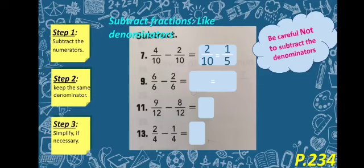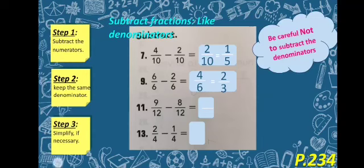Question number 9: 6 over 6 minus 2 over 6. 6 minus 2 equals 4, and we keep the same denominator, giving us 4 over 6. 4 over 6 can be simplified — they both can be divided by 2: 4 divided by 2 equals 2, and 6 divided by 2 equals 3, so the answer is 2 over 3. Next: 9 over 12 minus 8 over 12. 9 minus 8 equals 1, and the denominator stays 12. 1 over 12 is already in its lowest term, so the answer is 1 over 12. Then 2 minus 1 equals 1, keeping the same denominator, giving 1 over 4.